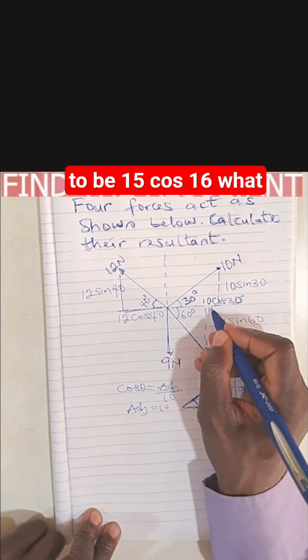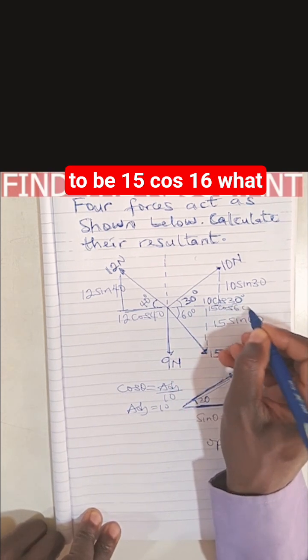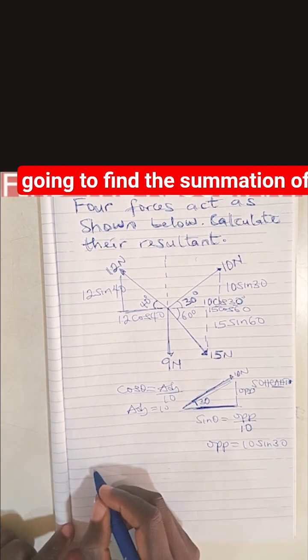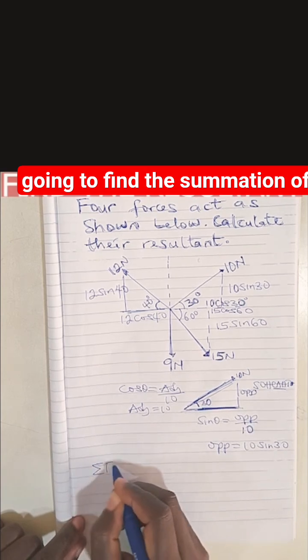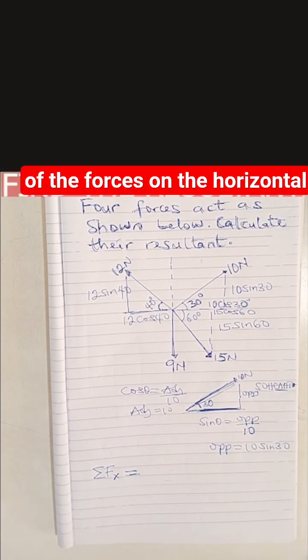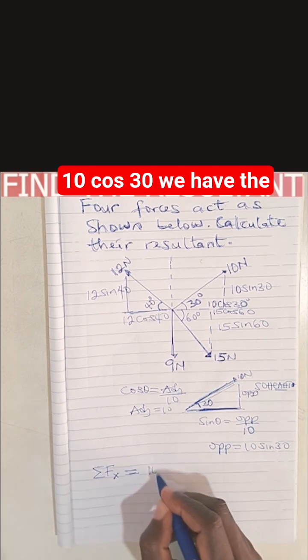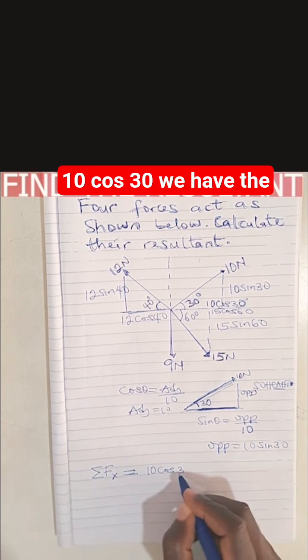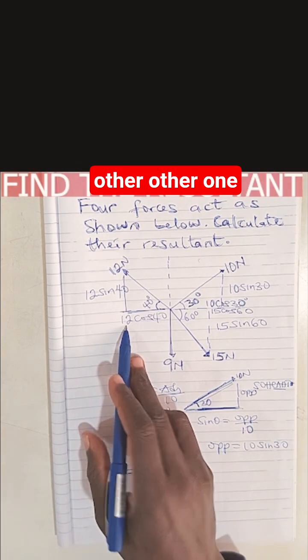What we're going to do now is find the summation of the forces on the horizontal. Summation of the horizontal forces: 10 cos 30 plus the other components.